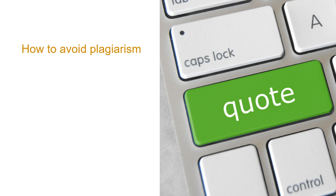Most important of all, how do you avoid plagiarism? Make it a rule always to provide references to other authors' material and to do it in a correct way. The reader must always know whether you are leaning on results or ideas from others, or whether you are making your own analyses or drawing your own conclusions. If you are summarizing an article you have read, rephrasing it in your own words, you need to include a reference to the article in question.